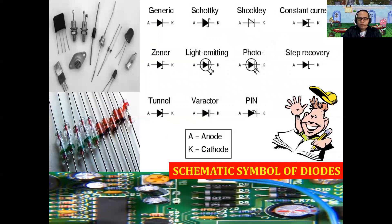These are some schematic symbols of diodes. The letter A stands for anode — the positive terminal. K stands for cathode — the negative terminal. This is the generic schematic symbol of a diode. Other symbols include the Schottky, constant current, Zener diode, light-emitting diode, photodiode, step recovery, tunnel diode, varactor diode, and pin diode.